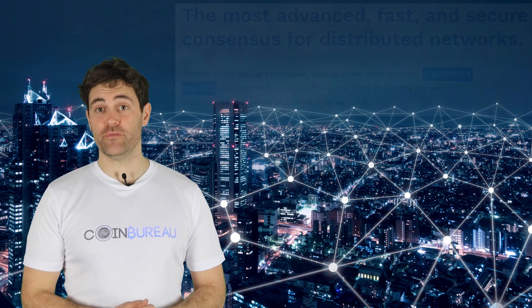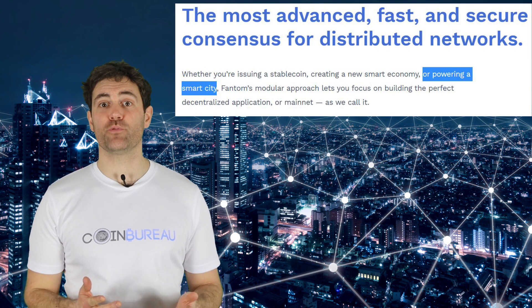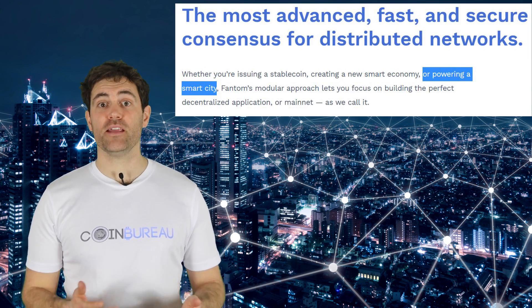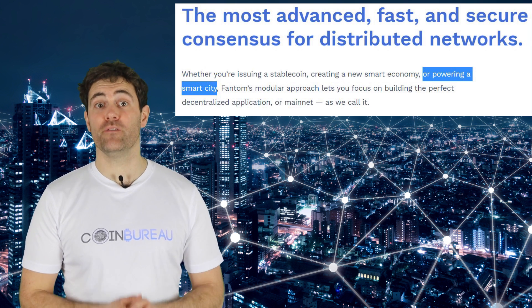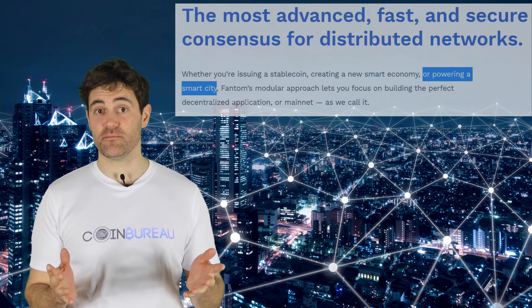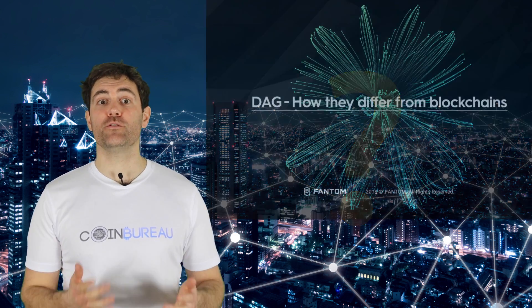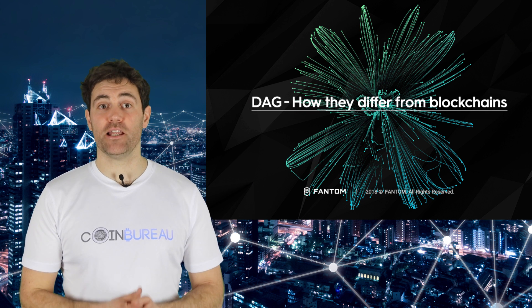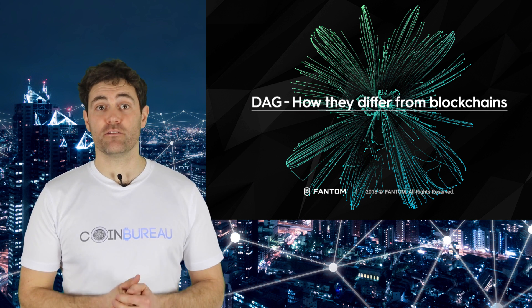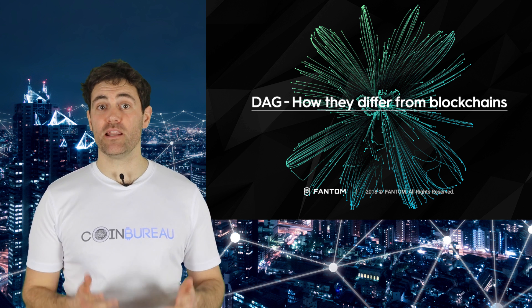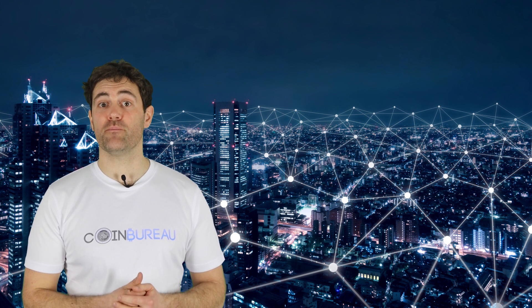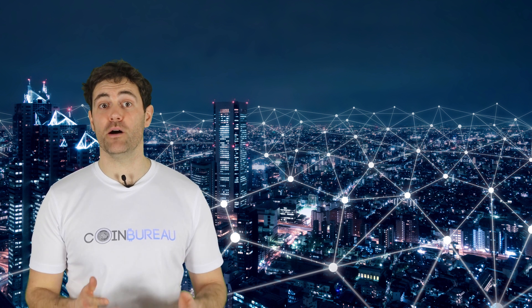Let's start with a bit of an overview. Fantom is a newish project with pretty lofty goals. They say they want to build a network of smart contracts intended to be used as the backbone for future smart cities. How do they plan to do this? Through the use of their DAG-based ledger. With this directed acyclic graph technology, also referred to as DAG, Fantom wants to realistically offer infinite scalability — one of the biggest thorns in the side of most crypto projects.